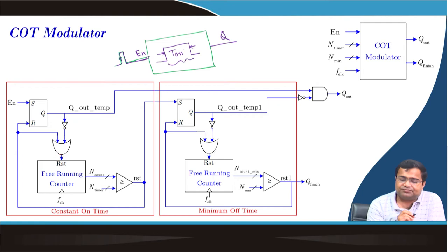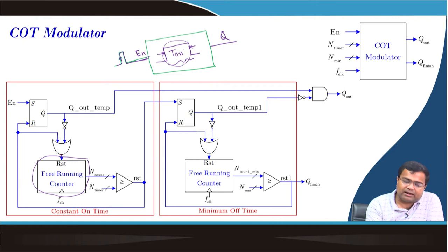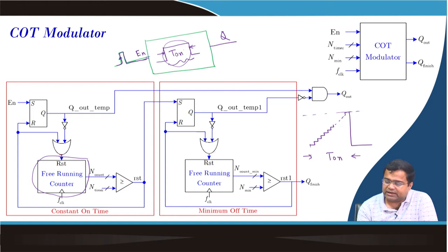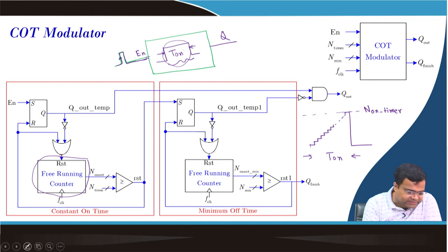For the constant on-time modulator, this enable signal and once T_on is over — T_on should be implemented using a counter, and this is exactly a free-running counter. Whenever the trigger pulse comes, the counter will start counting, generating this on-time. Imagine a sawtooth waveform — whenever it reaches a set height it turns off — and we want to generate this time as T_on. We want to set an n_on timer. When the counter hits the upper limit, it generates the time, and this is a timer.